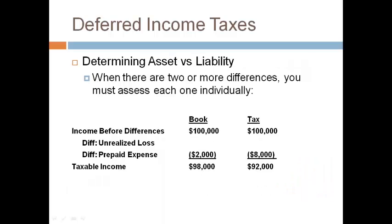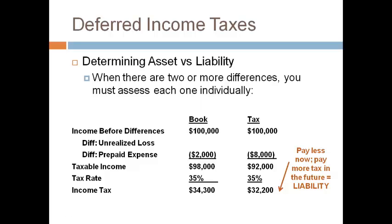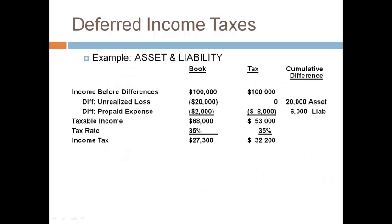Now let's assume that the prepaid expense is the only book-tax difference. The company deducts more expense for tax than for books, which makes taxable income lower and the taxes to pay lower in the current year. Lower taxes in the current year will give higher taxes to pay in future years — paying more taxes in the future is a liability. We previously determined that the unrealized loss is a deferred tax asset and the prepaid expense is a deferred tax liability, and the two must be recorded separately and are not netted.